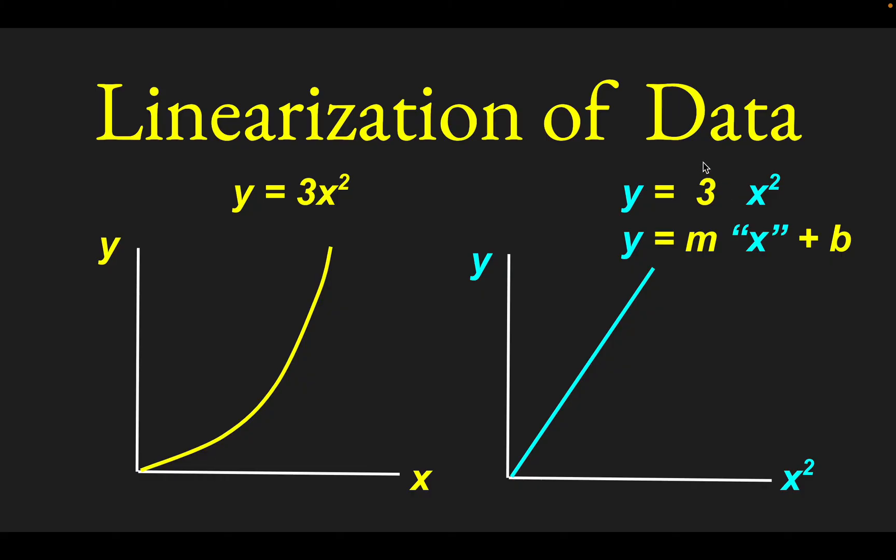And if you compare y equals 3 times x squared to the pattern y equals mx plus b, the equation of a line, what we're doing here is we're letting x squared play the role of what is normally called x, or the horizontal axis variable. And so since the x squared is taking the place of the x, we have this y equals mx plus b situation here. And you see you get a slope of 3. m, which is normally the slope, is now 3 is playing the role of the m. And notice there is no plus b, so there's no y-intercept in this case.